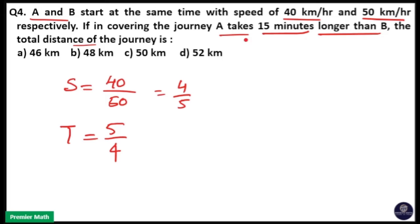Here, A takes 15 minutes longer than B means the difference between 5 and 4 is 1 part. 1 part is equal to 15 minutes, so 4 parts will be 4 into 15, which is 60 minutes.